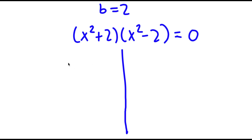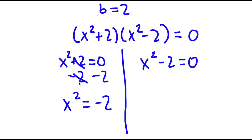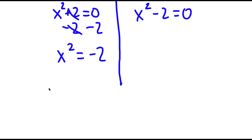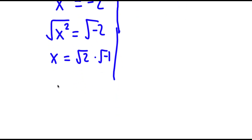So now this gives me two equations: x squared plus 2 equals 0, and x squared minus 2 equals 0. For x squared plus 2 equals 0, I can subtract 2 on both sides so I have x squared is equal to negative 2. Now to solve this I'm going to take the square root on both sides. The square root of x squared is x, and the square root of negative 2 is the square root of 2 times the square root of negative 1. Since the square root of negative 1 is equal to i, I have x is equal to positive or negative square root of 2 times i.